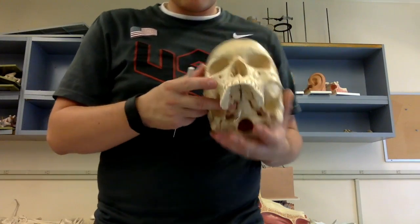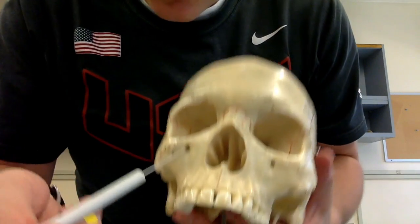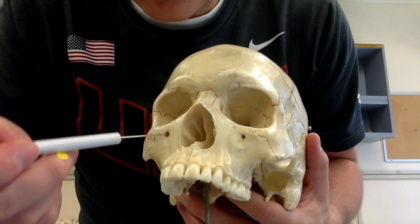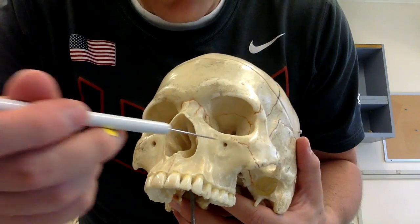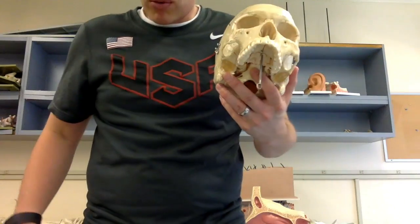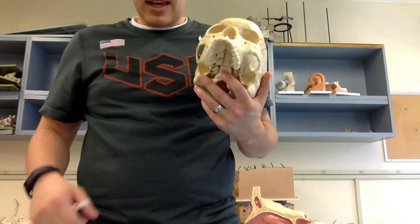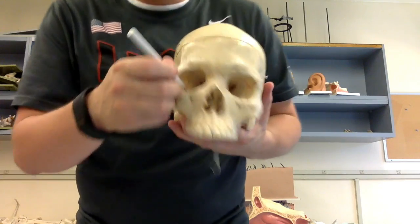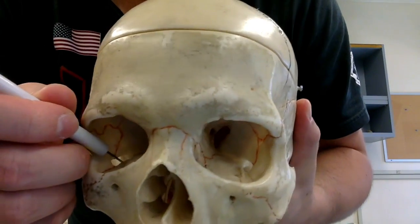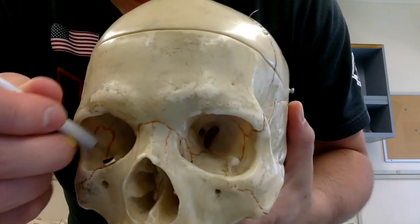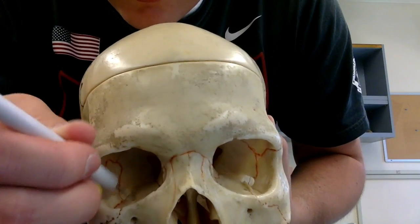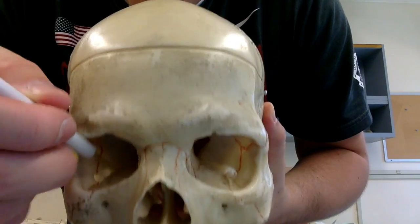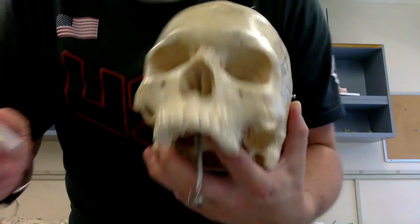Then we have the infraorbital foramina — these are the holes that sit in the middle of the maxilla, below the orbitals. Next is the inferior orbital fissure, which is this jagged fissure right here. That is the inferior orbital fissure.